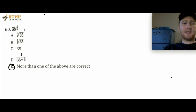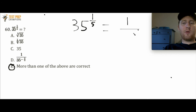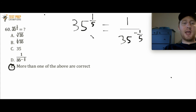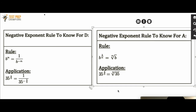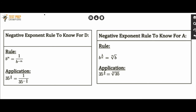The correct answer here is both A and D. 35 raised to the 1/5 is equal to 1 over 35 raised to the negative 1/5 — that's a general exponent rule. Also, 35 raised to the 1/5 is equal to the 5th root of 35. These are two general rules you'll want to remember. They could be fair game on your test.